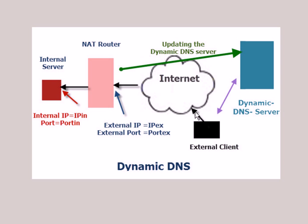We have an external client on the internet that wants access to this internal service. To enable that, we use a technique called port forwarding, which makes the service available on the internet by effectively making the server appear to be on that external port and IP address. To connect, the external client connects to the external IP address. Port forwarding is covered in another article on the website. Once port forwarding is configured, the client can connect to the internal machine using that IP address — and we don't actually need dynamic DNS configured for any of this to work.